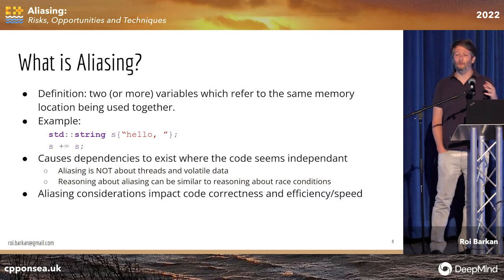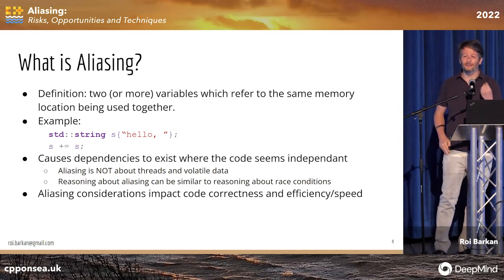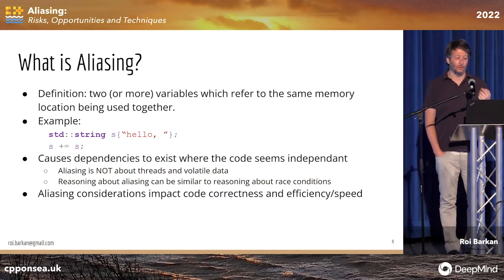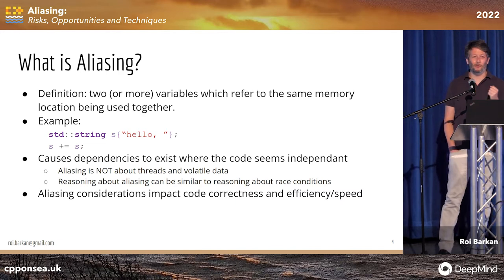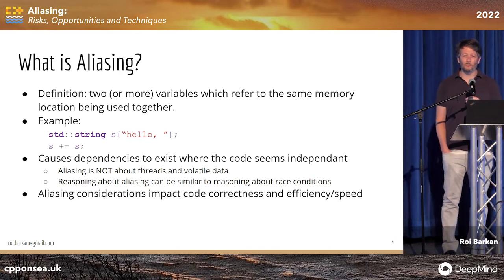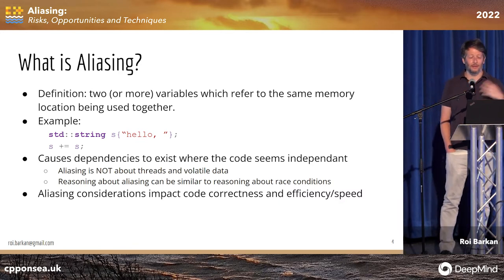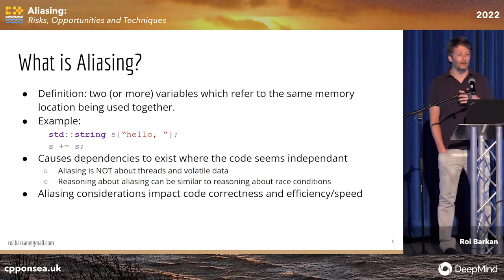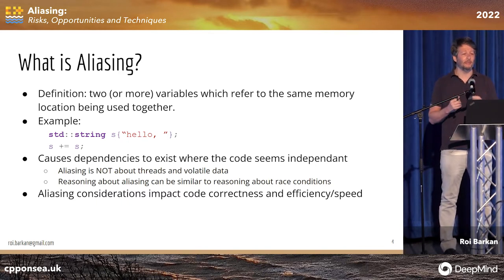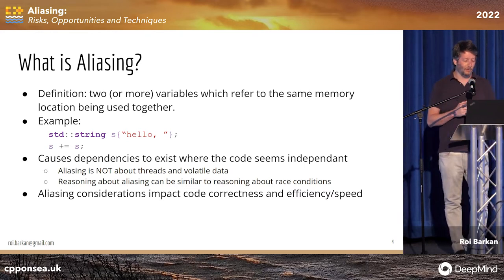This type of aliasing connection is a dependency between those two variables that is hidden when you just look at the code. When I look at the code, I will see two different variables and two different activities that actually touch the same location in memory — a dependency that doesn't look very apparent when someone inspects the code. I want to say up front that aliasing is not about threads and not about volatile data. Sometimes these things get confused because they are often analyzed in a similar fashion.